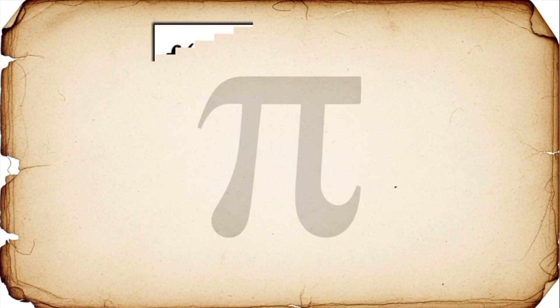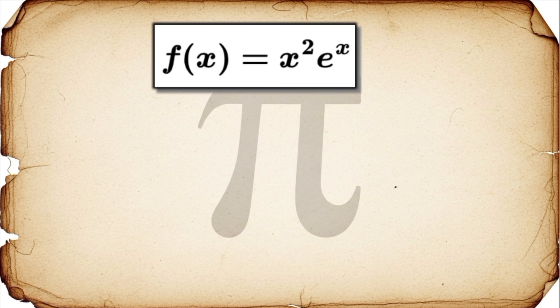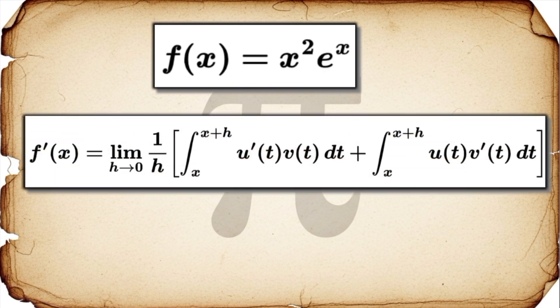Alright, here's our mission. Find the derivative of the function f of x equals x squared times e to the x. But we're not going to use the standard product rule you memorized. Nope, we're going to use its equivalent form derived from our new definition. This says the derivative is the limit of 1 over h times the sum of two integrals, the integral of u'v plus the integral of uv'. So our job is to calculate those two integrals.